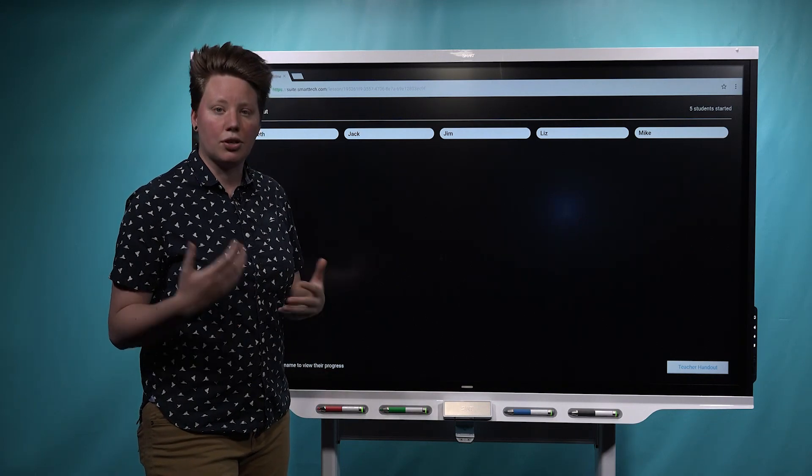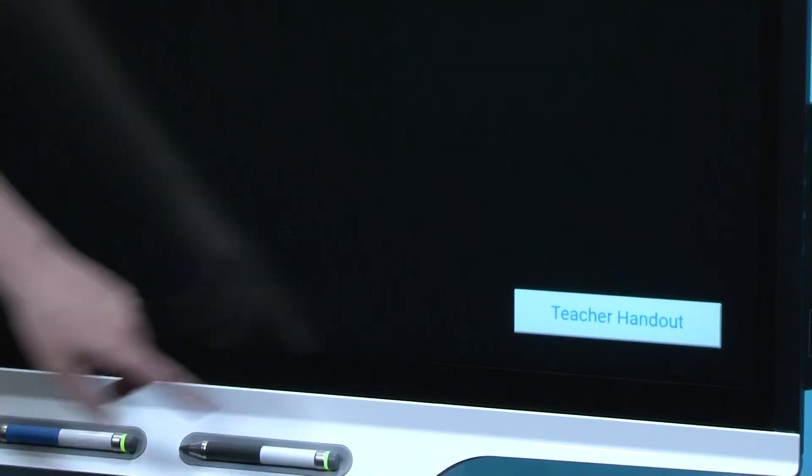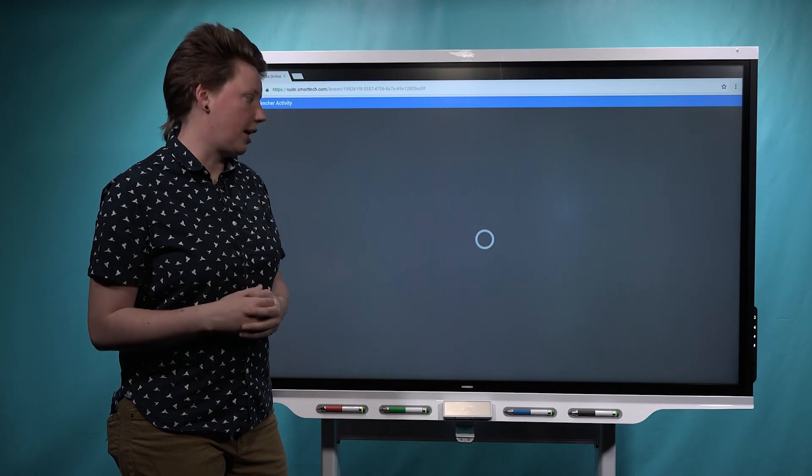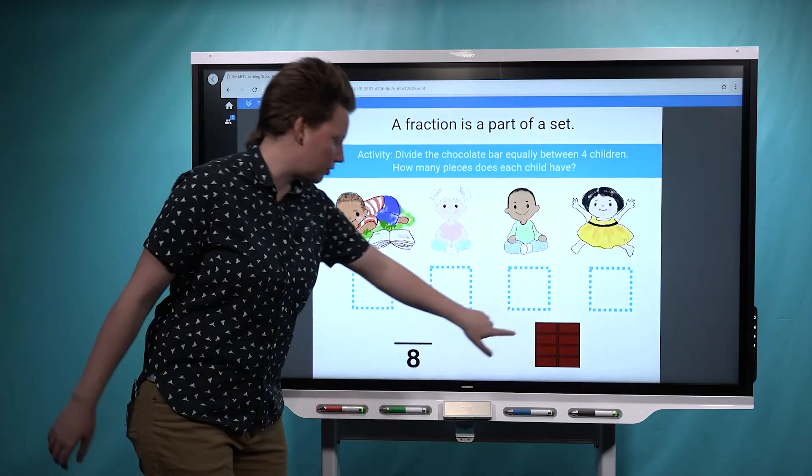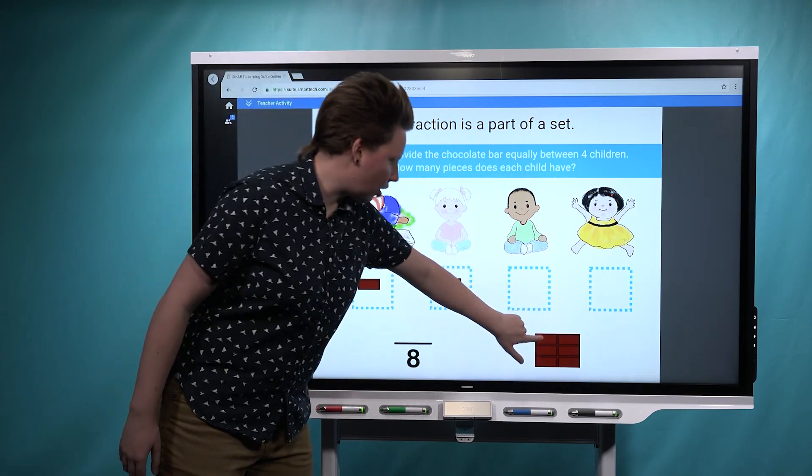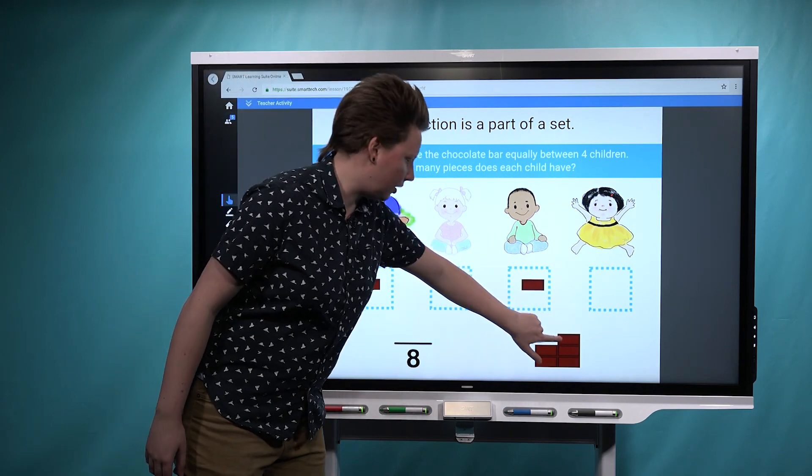And if you as a teacher are still waiting for students to connect, you have the option using this teacher handout button to actually open up your own copy of the activity so that you can demonstrate for students how to complete it. So I might start showing them that I want them to divide up the chocolate equally between these children.